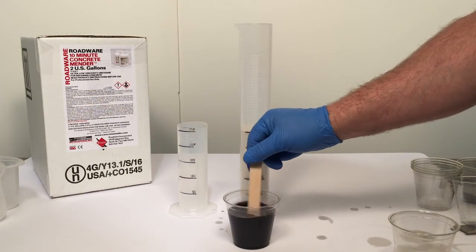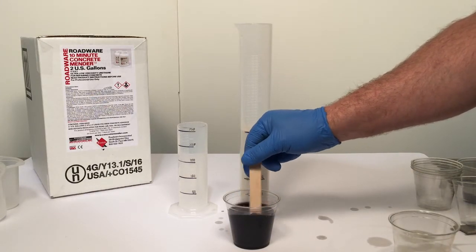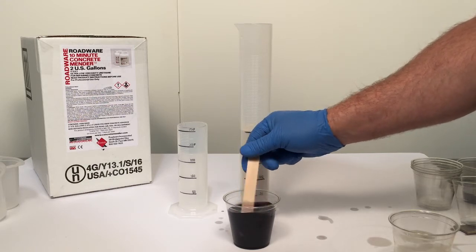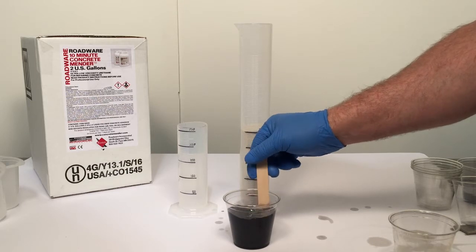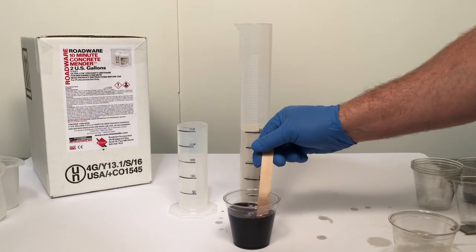We're going to mix side A and side B of Concrete Mender at a one-to-one ratio. We mix for about 15 seconds with a stick like this. It's very easy to do. Concrete Mender is very low in viscosity so manual mixing like this is just fine.